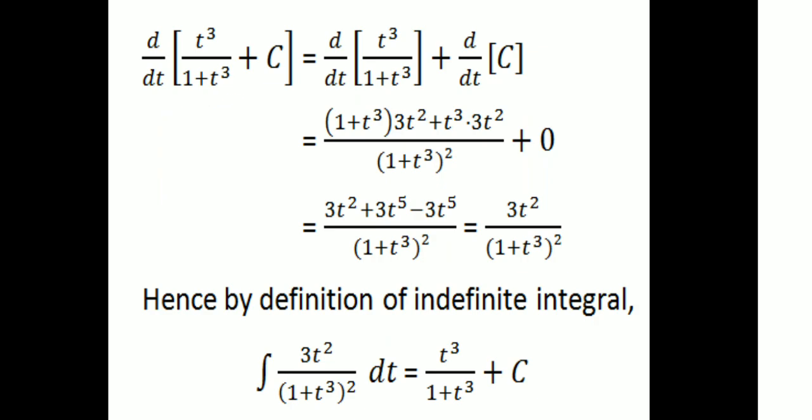Taking d by dt of the right-hand side, the integrand is 3t squared divided by (1 plus t cubed) squared. So, d by dt of t cubed divided by (1 plus t cubed) plus c equals d by dt of t cubed divided by (1 plus t cubed), plus d by dt of c. Applying the quotient rule: d by dt of u over v equals (u dash times v minus u times v dash) divided by v squared.